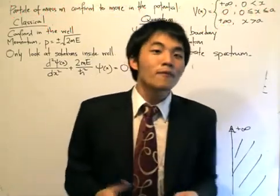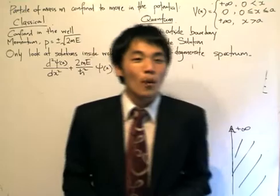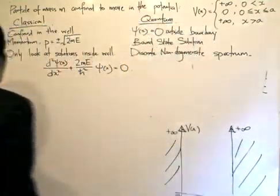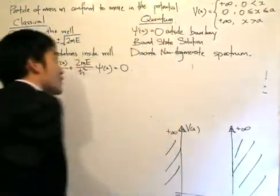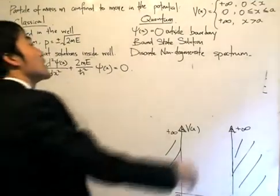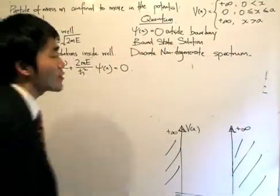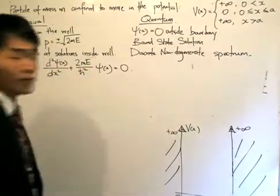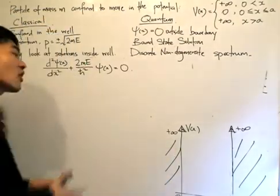Our problem today involves what we call the unsymmetric infinite square well, and it's set up as follows. We have a particle of mass m confined to move in a potential V(x) equal to plus infinity for x less than zero, zero for x between zero and a, and plus infinity for x greater than a. I've sketched out the potential over here as you can see.